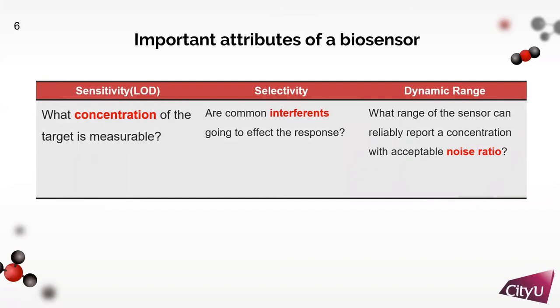Other than sensitivity, a good biosensor needs to have excellent selectivity and large dynamic range as well. Selectivity means how much the common interference affects the response. Therefore, the less the better. For dynamic range, it means the range the biosensor can show reliable response without too much noise. Now, we are going to show you some of our research results.